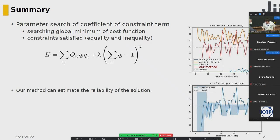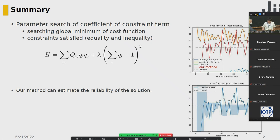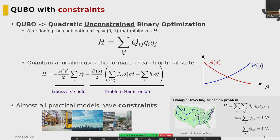Let us begin with QUBO with constraint. When dealing with annealing algorithms such as quantum annealing, we often use the QUBO model. QUBO stands for Quadratic Unconstrained Binary Optimization. The aim is to find the combination of Q_i — binary values, 0 or 1 — that minimizes the Hamiltonian as depicted.